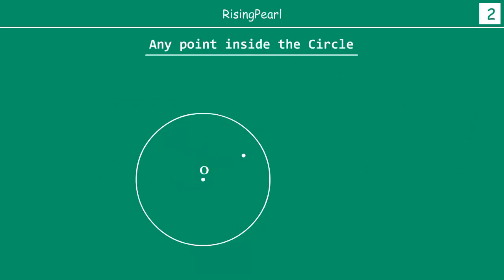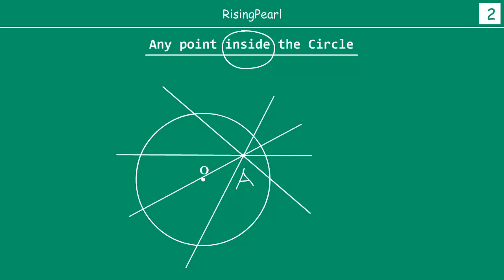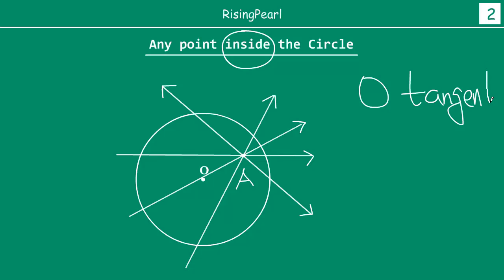Now let's take a point which is inside the circle. This time point A is actually inside the circle. Now let's draw some lines that pass through point A. As you can see, each of these lines actually intersects the circle at two points — all of them. That means you cannot draw even one single line that touches the circle at only one point. Each and every line that passes through point A will intersect the circle at two points. So there are zero tangents. You cannot draw any tangent from a point which is already inside a circle.